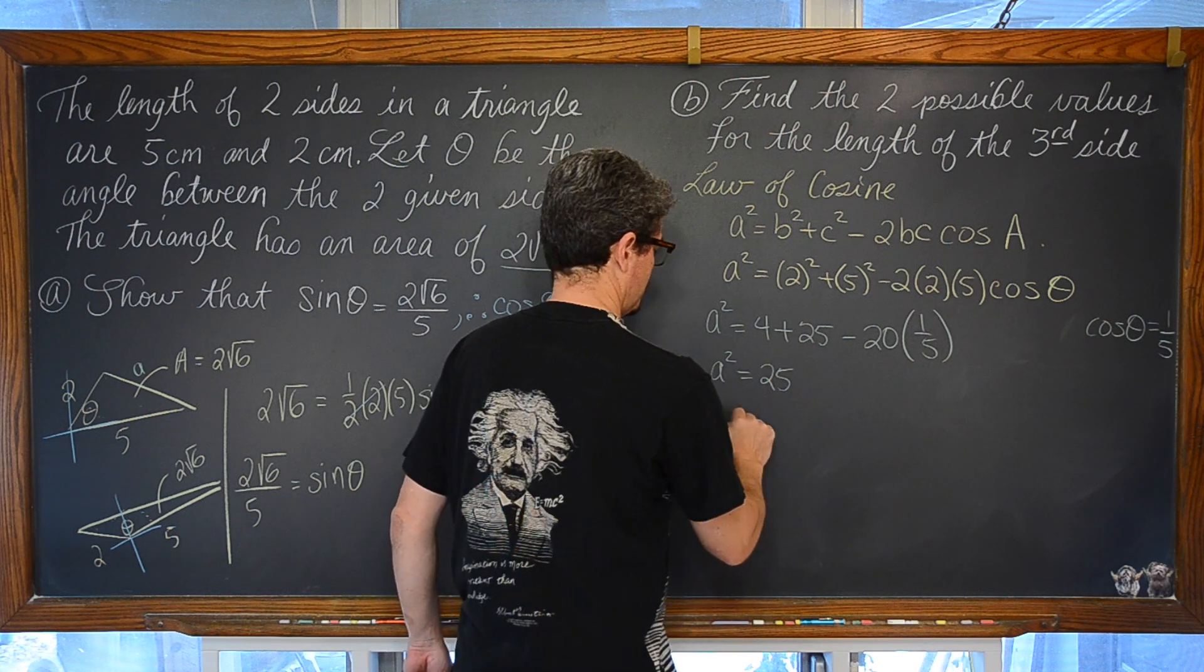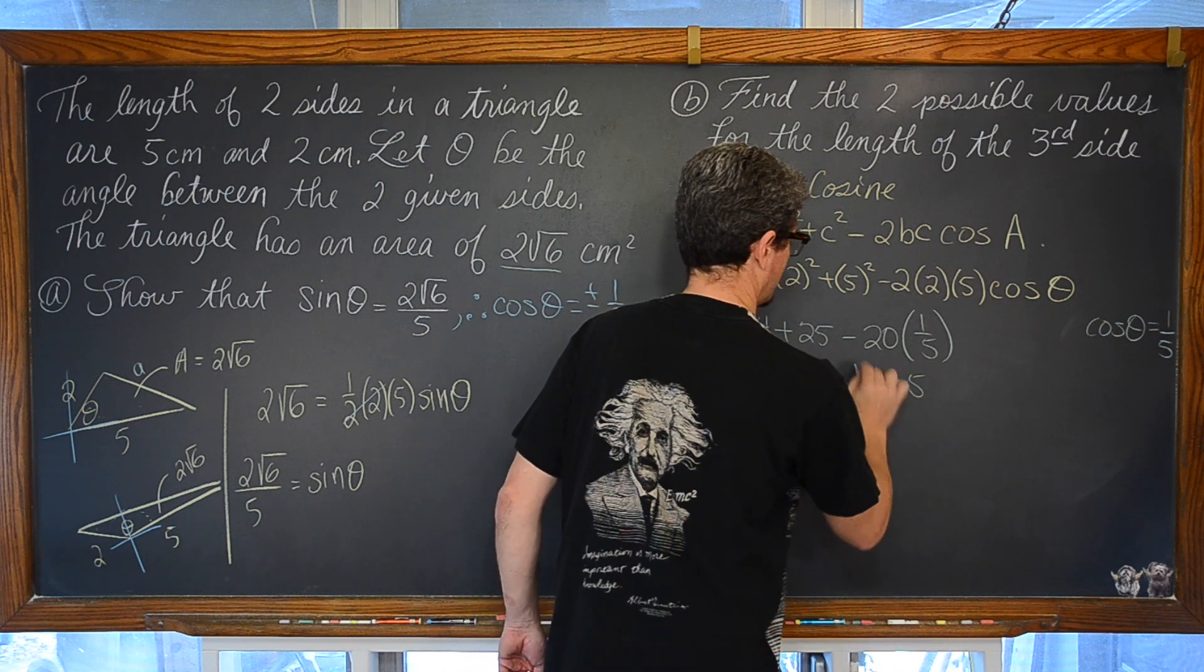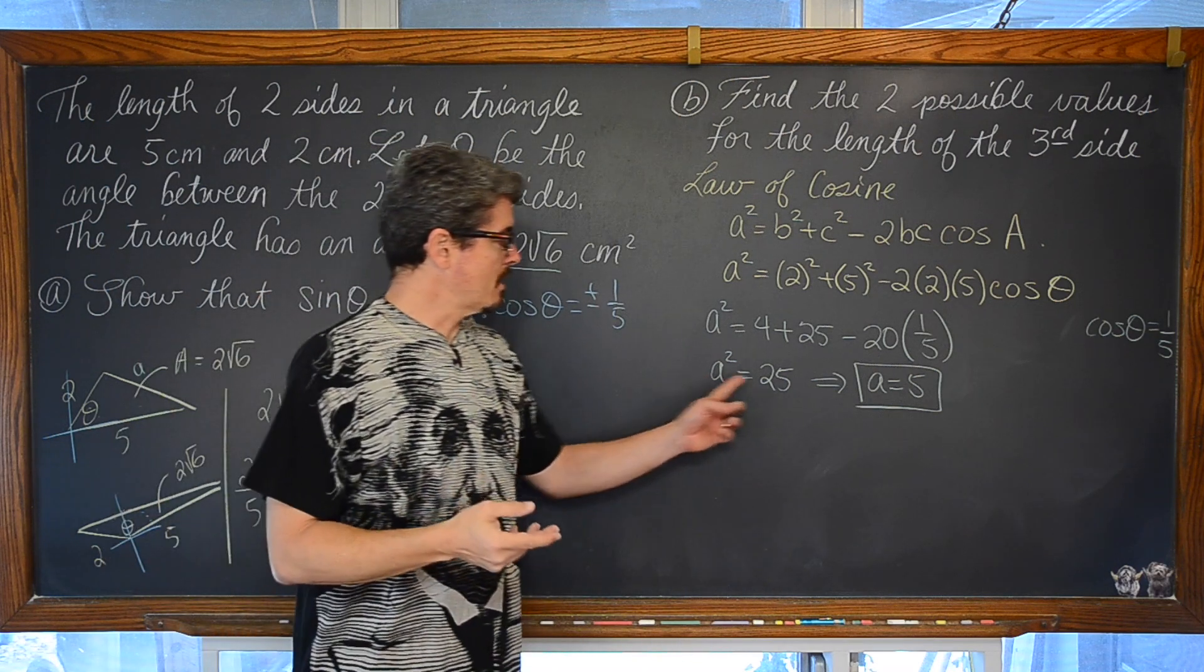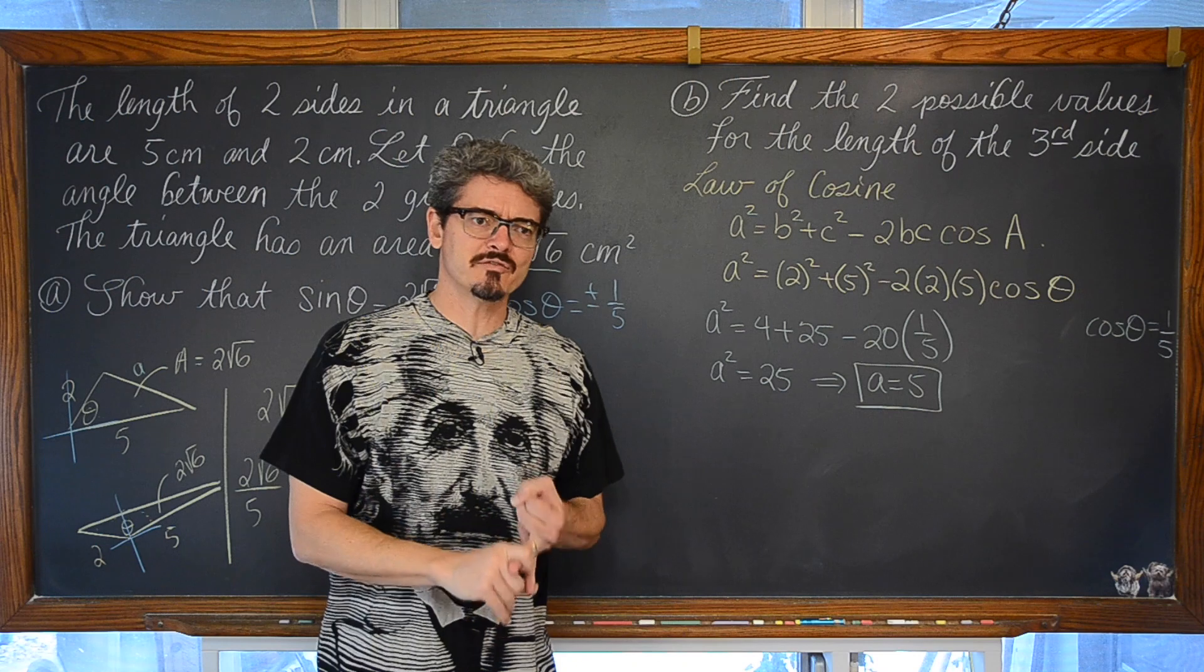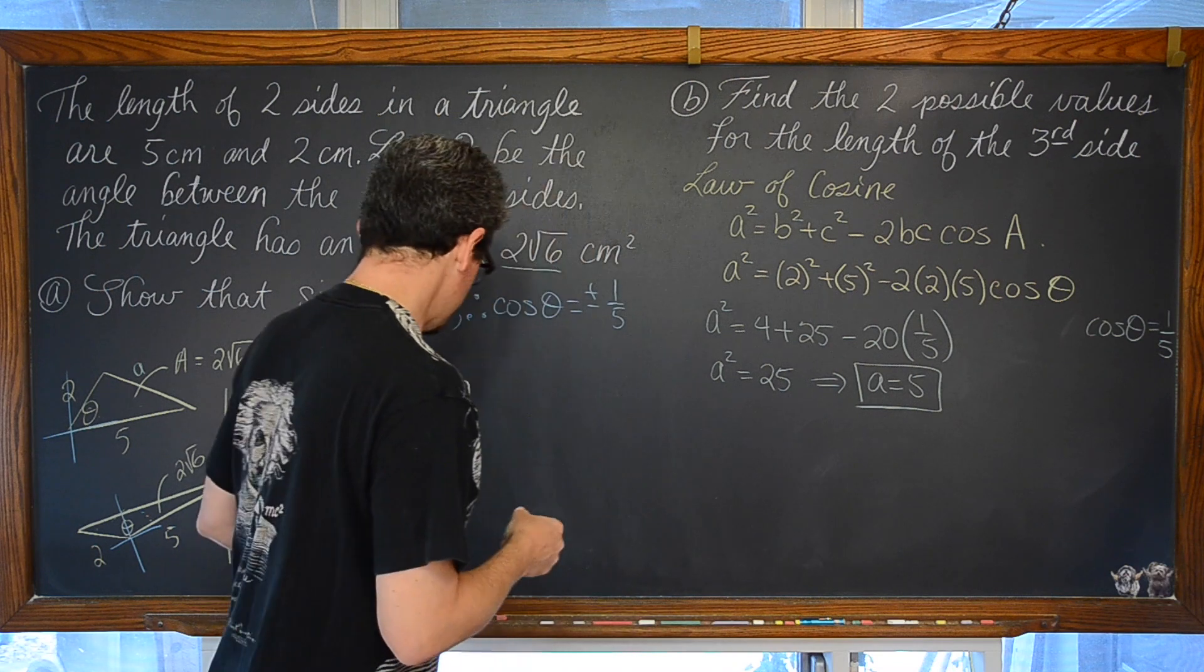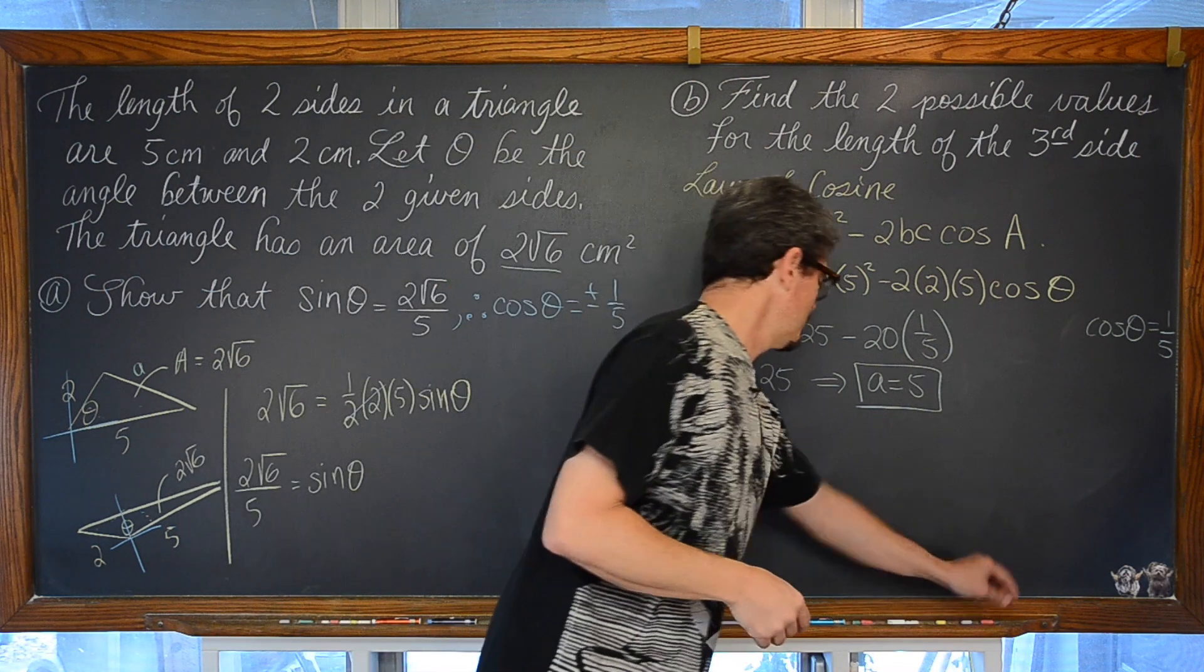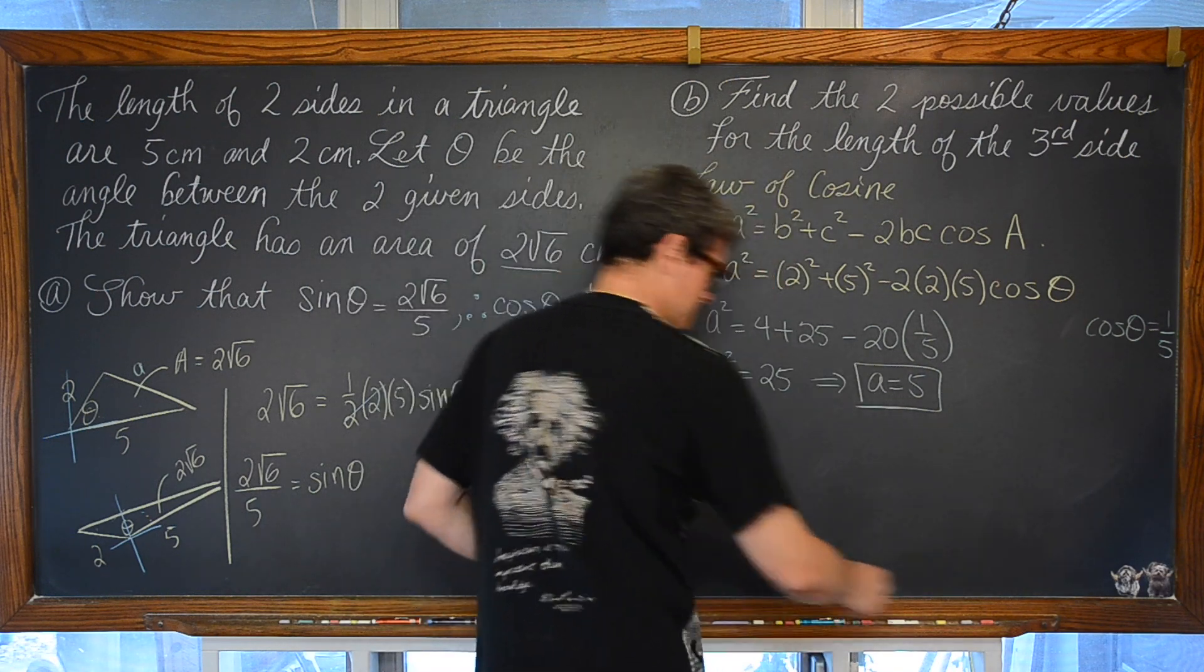And therefore we have a is equal to 5. Now, this time, as I square root both sides of this equation, I'm not going to consider both the positive and negative answer, because a here is a length of a triangle, and there's no such thing as a negative length. So, we'll have to make sure not to account for that, as I look for some orange chalk. Okay, we'll just use red.